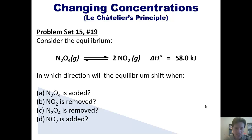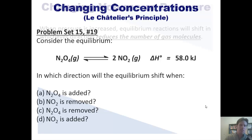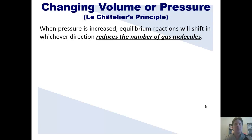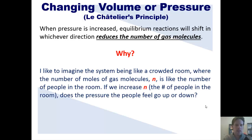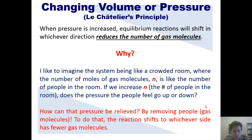Let's see how Le Chatelier's Principle applies to settings in which we change volume or pressures. When pressure is increased, equilibrium reactions will shift in whichever direction reduces the number of gas molecules. I like to imagine a system being like a crowded room where the number of moles of gas molecules, N, is like the number of people in the room. If we increase N, the number of people, the pressure goes up — everyone feels more crowded. So how do you relieve that pressure? You do it by removing people or gas molecules, shifting the reaction in whichever direction gives you fewer gas molecules.